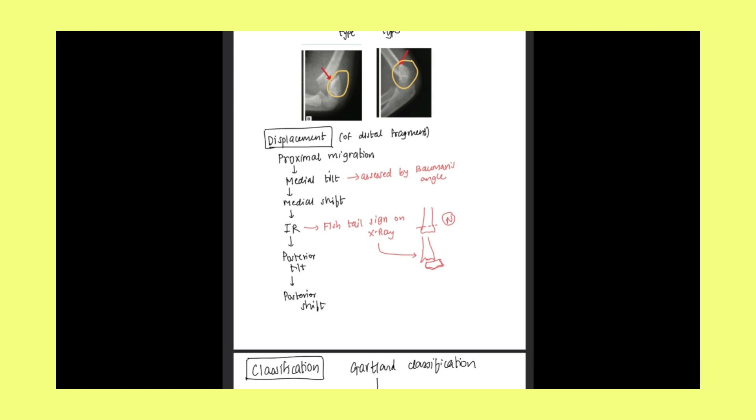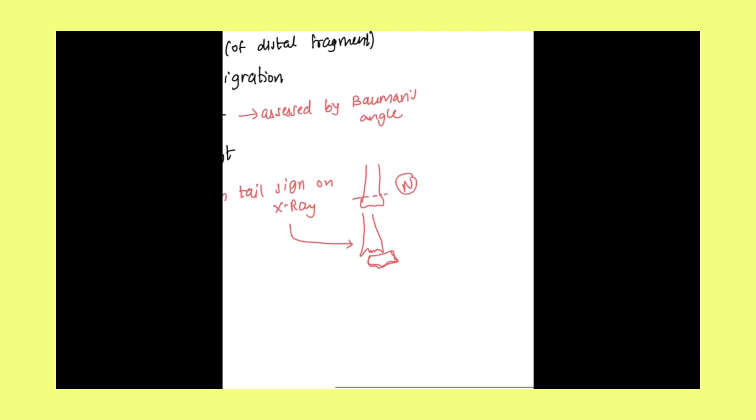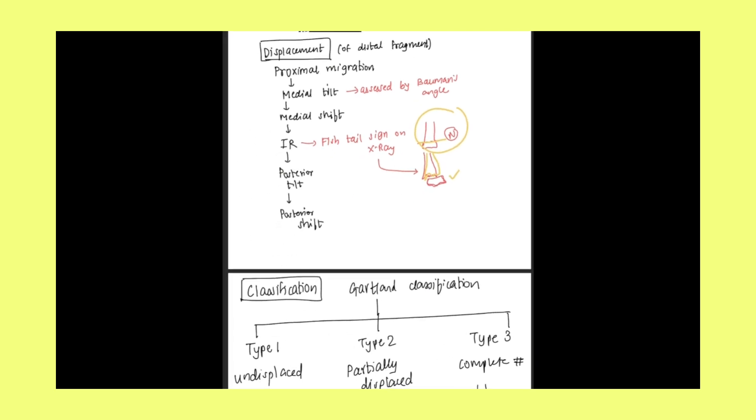Internal rotation once happens, then on x-ray, fish tail sign will be seen. It is clearly drawn here. Like this is the normal thing, then fracture occurs here in the supracondylar region. The displacement and internal rotation of the distal segment occurs. So this appears like tail of fish. So the fish tail sign on x-ray.